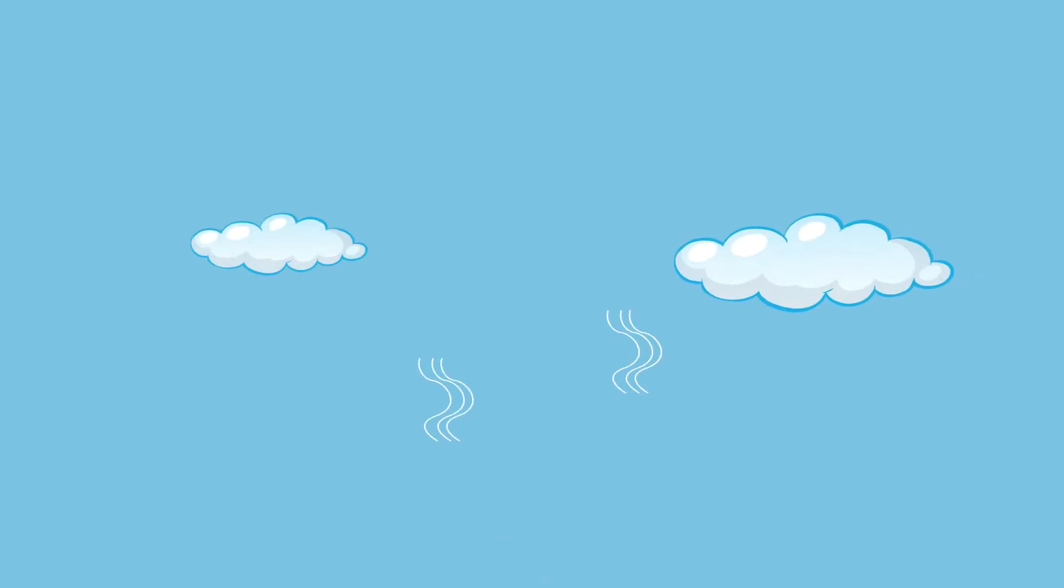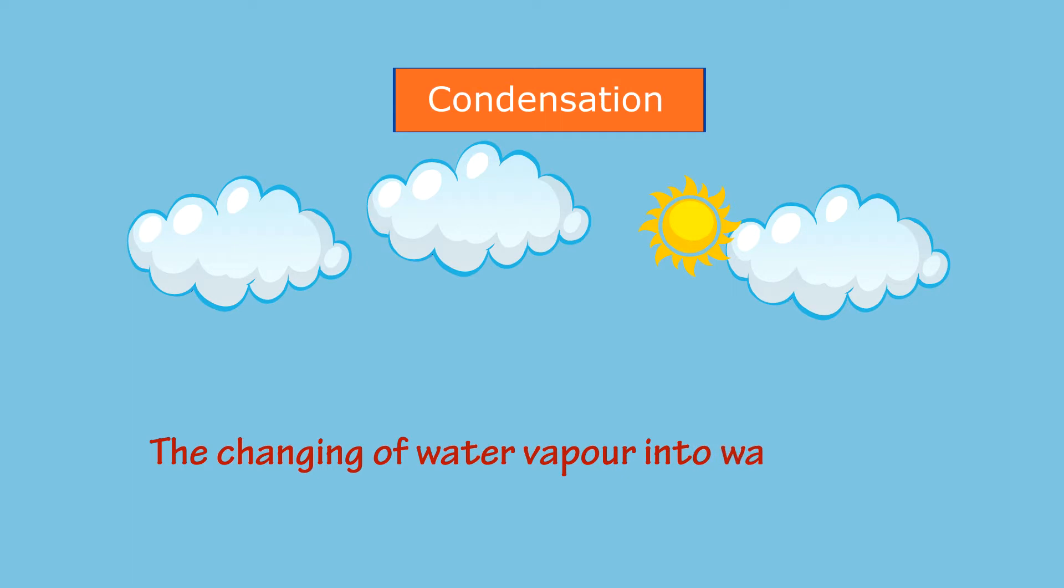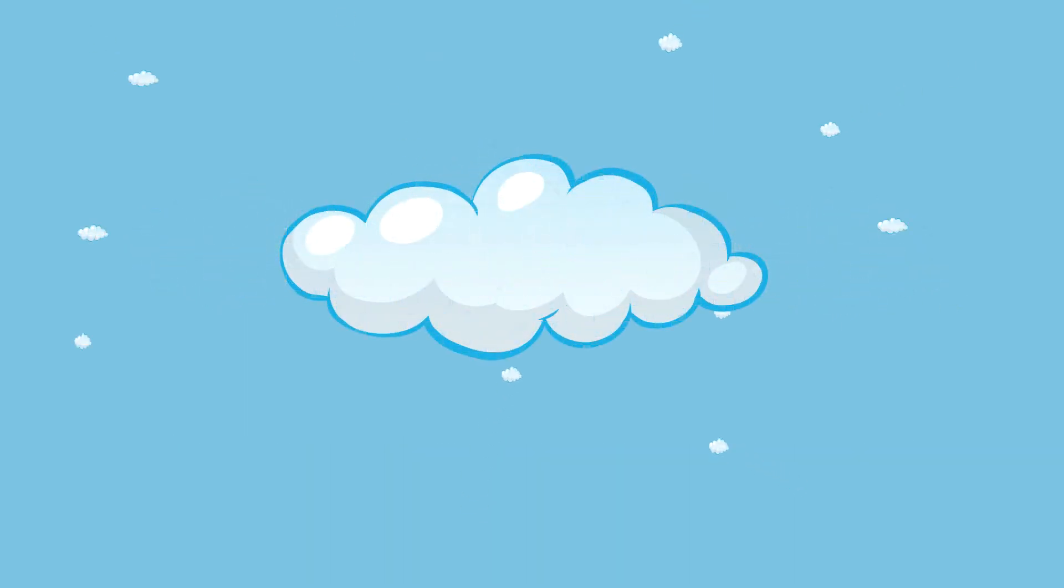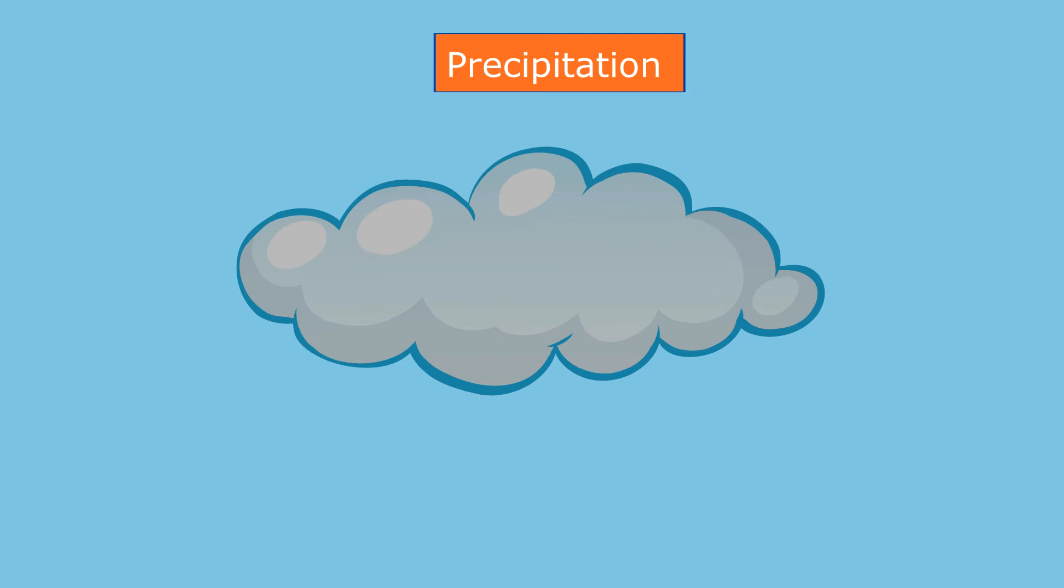It starts cooling down and forms tiny water droplets. These water droplets come together to form clouds of water vapor into water droplets. This is called condensation.